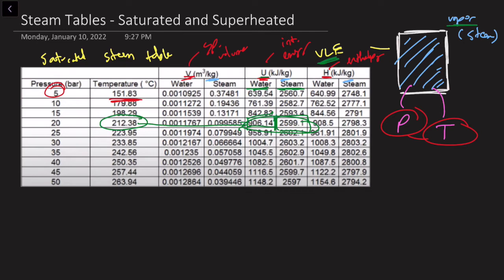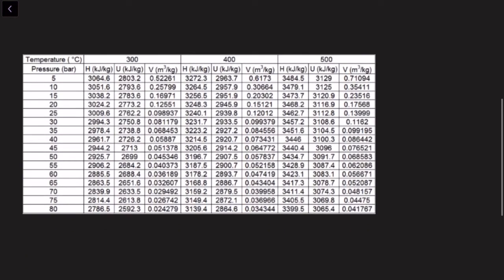And so with superheated steam tables, it's a slightly different story in the sense that you can see now how we don't just care about looking across a row. We also have to look across a column. And so in this case, if I said, hey, I've got some superheated steam. It's at five bars, and I know that the temperature is at 500 degrees Celsius.